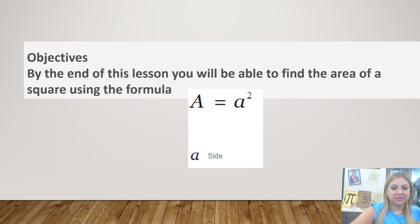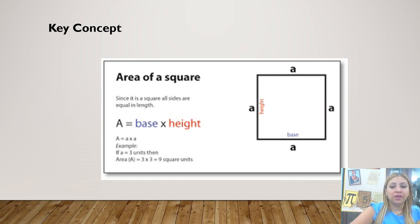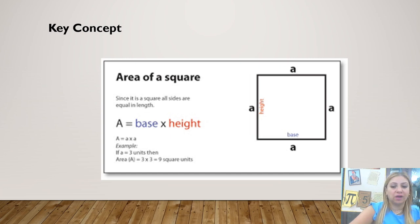The variable 'a' represents the side. This is our key concept. As you see, this is a square, and it has four sides that are equal to each other. I'm going to represent each side by the variable 'a'. To find the area, I'm going to multiply base by height, which is a times a, or a squared.